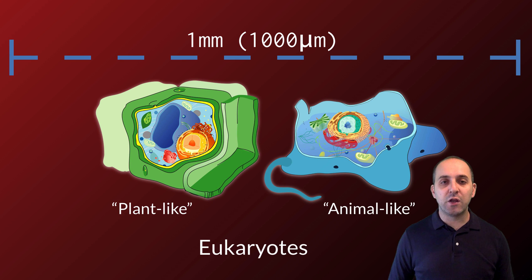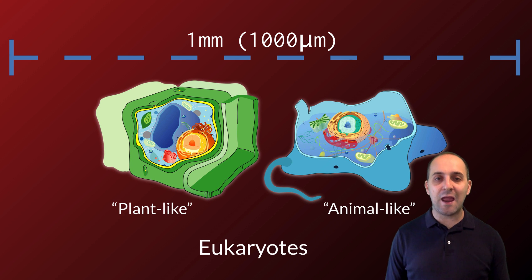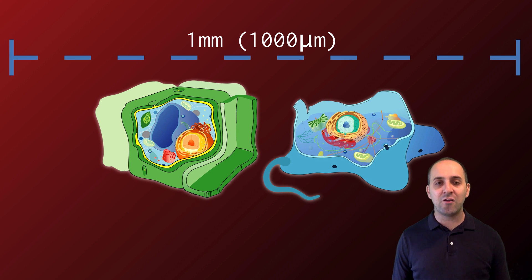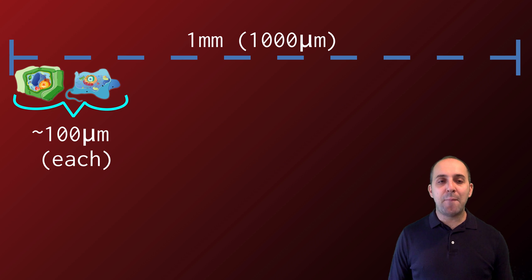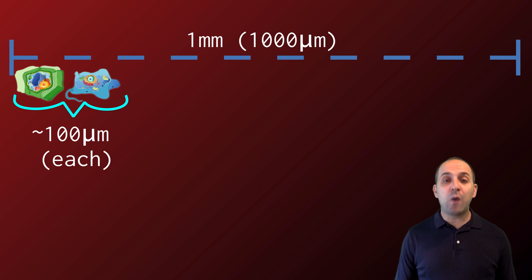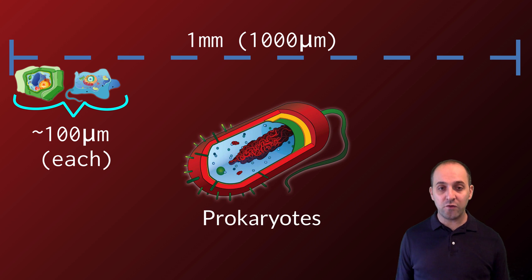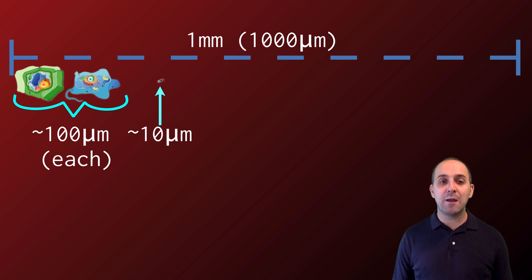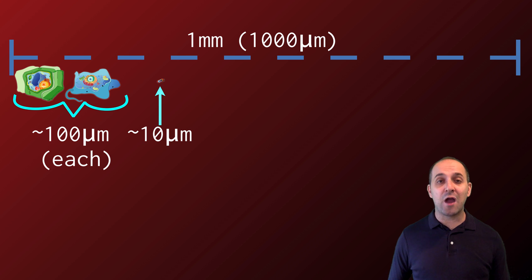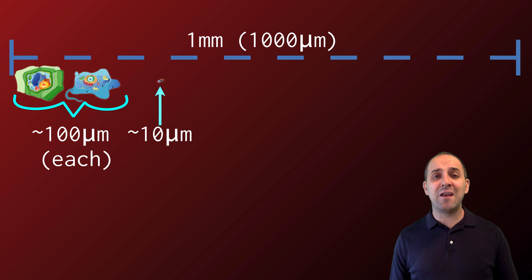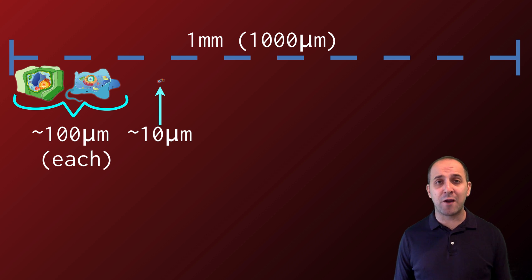Our eukaryotic cells — our plant-like and animal-like eukaryotic cells — tend to be about a hundred micrometers large each, about a tenth of a millimeter, which is why you generally need a microscope to look at cells. Prokaryotic cells, like a bacterial cell, are considerably smaller. They tend to be about ten micrometers, or about the diameter of the eukaryotic cell's nucleus. The bottom line is that in order to actually observe cells, you'll have to use a microscope in almost every case.